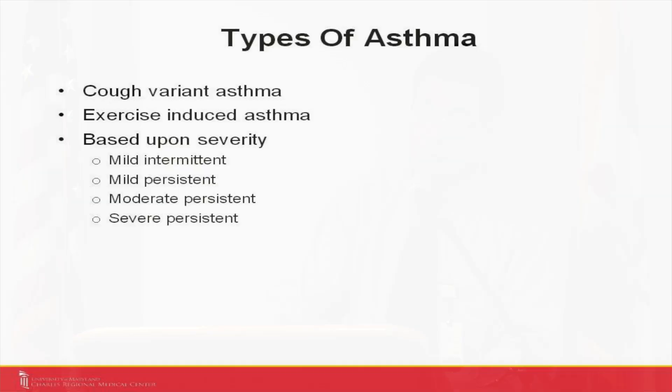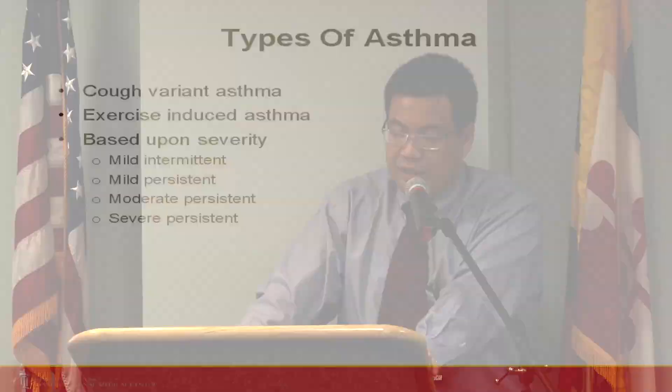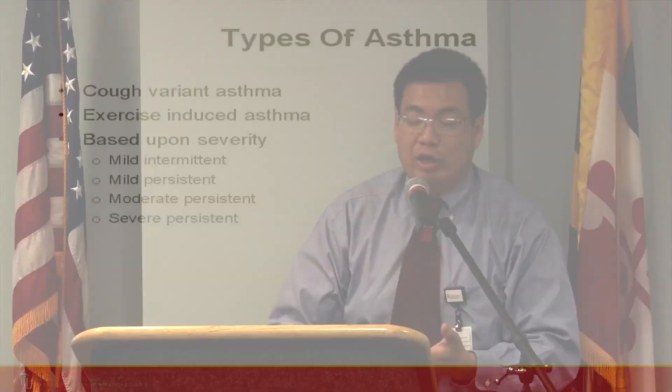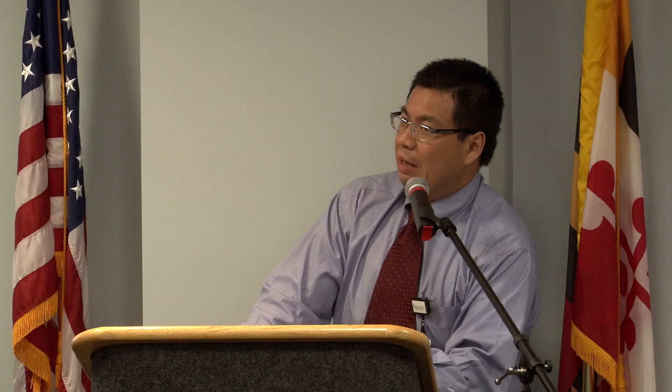Types of asthma: cough variant asthma, usually in children who don't wheeze — they just cough for weeks or months, and asthma medication may work. This type usually outgrows on its own. Exercise-induced asthma is triggered by exercise — when you exercise, you create heat, take more air, and the airway constricts causing coughing. Asthma is classified by severity: mild intermittent, mild persistent, moderate persistent, and severe persistent — based on how severe the symptoms are, how often they occur, and how they're treated.